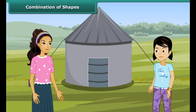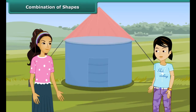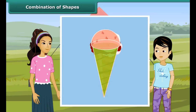Rita, look at this tent. This is made up of two shapes. Can you tell the name of the shapes? Yes, I can see the shapes. One is a cone and another is a cylinder. Correct! Similarly, we have ice cream. We can see that it is a cone surmounted by a hemisphere.